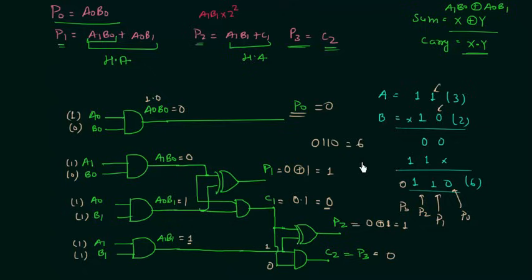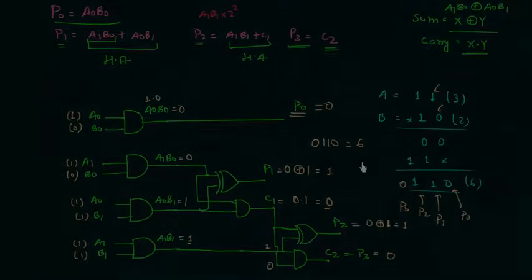You can easily obtain this circuit if you know how to multiply two binary numbers. You can also obtain a 4-bit multiplier using the same technique. I will end this lecture here — see you in the next one.